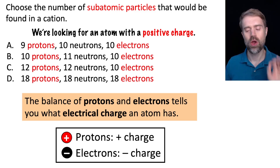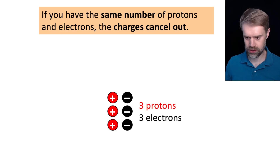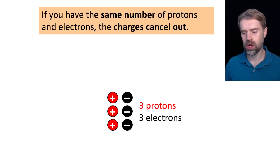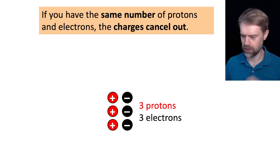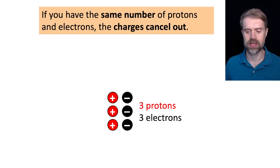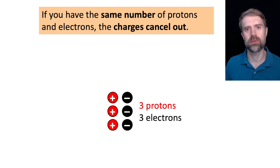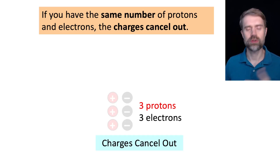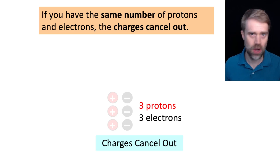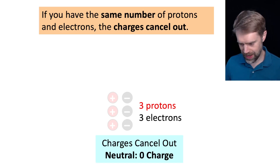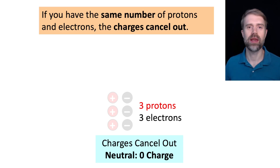Here's how this works. Protons have a positive charge and electrons have a negative charge. For net charge, it all comes down to one thing: if you have the same number of protons and electrons, the charges cancel out. For example, an atom with three protons and three electrons — they have opposite charges, and we have the same number of each, so the charges cancel out totally and we're left with an atom that has zero net charge. It's neutral.